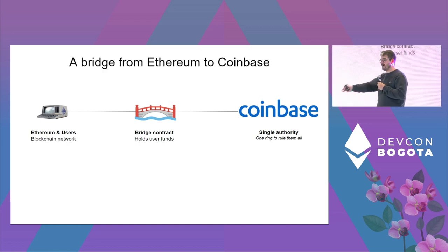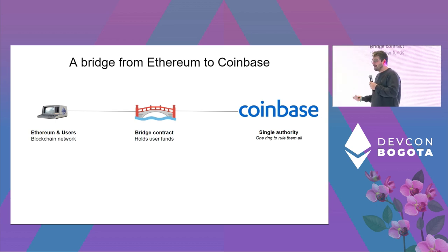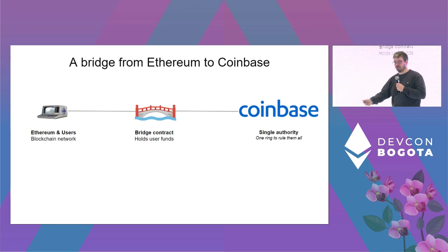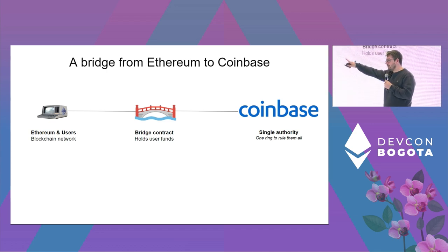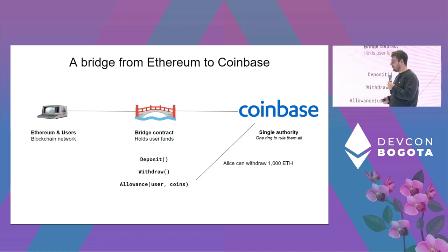You're on Ethereum, you lock your funds into this bridge, and then it magically appears on Coinbase. You go on Coinbase, transfer your assets, buy some coins, sell some coins, lose some money, make some money, and then eventually you want to get your coins back to Ethereum. So you'll ping Coinbase and say, 'Let me withdraw my 1000 ETH.'